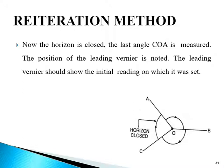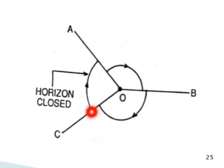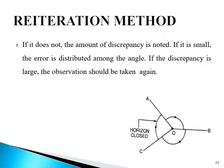The position of the leading Vernier is noted — it should show the initial reading on which it was set at the start of the procedure. If it does not, the amount of discrepancy is noted. If it is small, the error is distributed equally among the angles. If the discrepancy is large, the observations should be taken again.